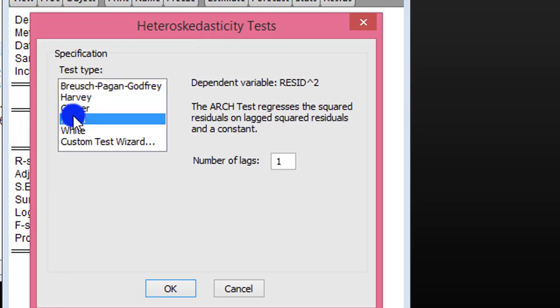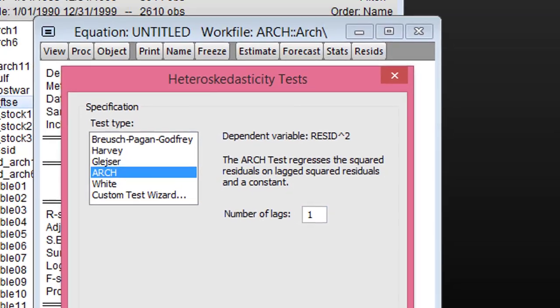Select ARCH, and you can see here that EViews is telling you that the dependent variable is the squared residual, which is what we want. The number of lags is one because we are estimating an ARCH(1). We are testing for the presence of ARCH in our AR(1) specification. We click OK.